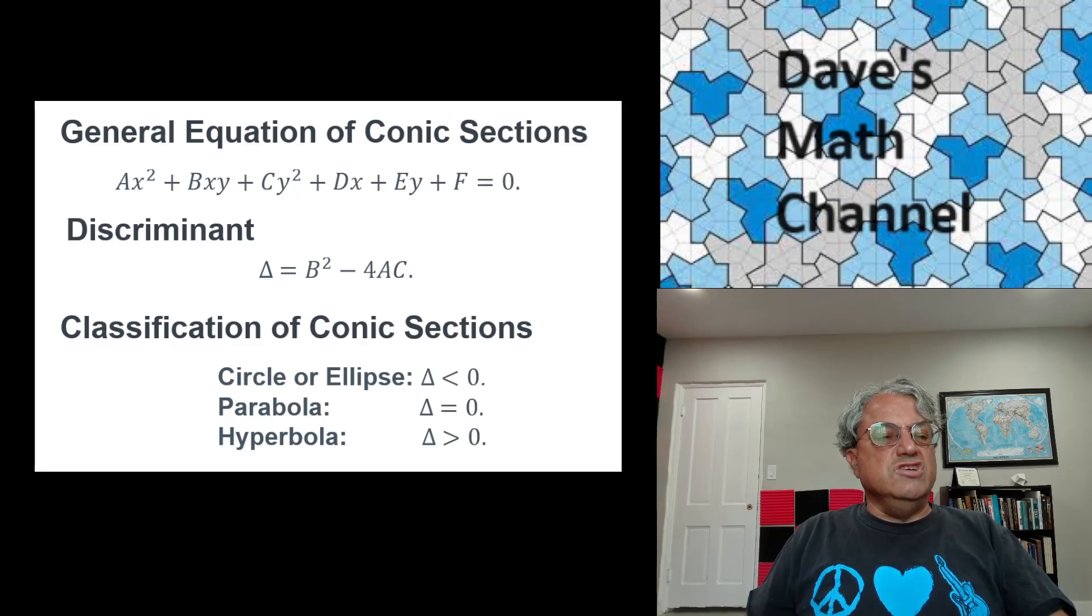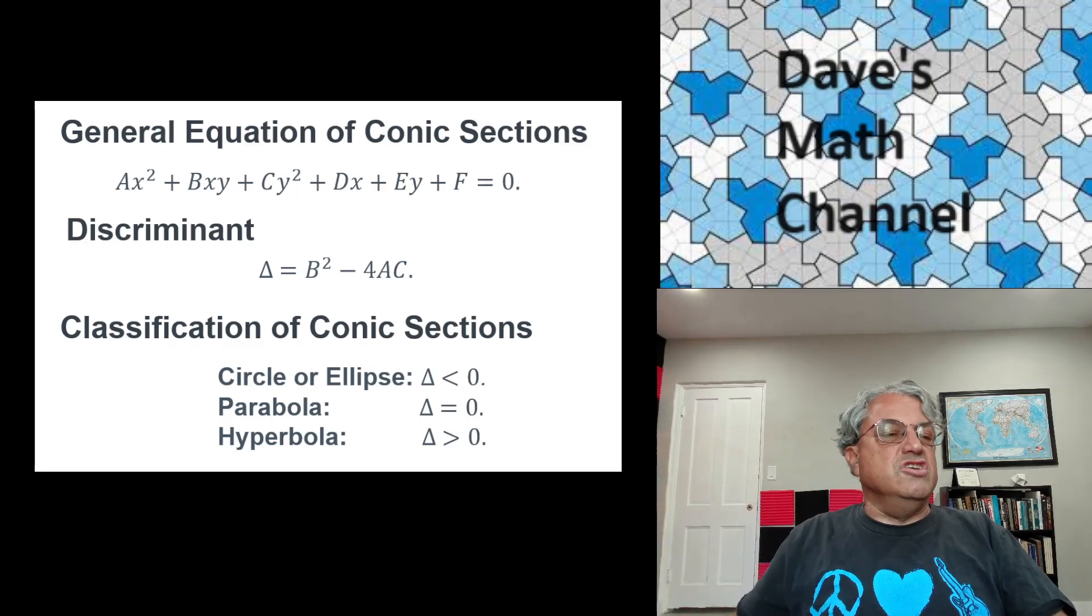So it has a nice form. If you just write a quadratic equation in two variables, all that means is a polynomial equation where the maximum degree of any of the terms is two. So x squared, xy, and y squared all have degree two. And then x and y just have degree one.